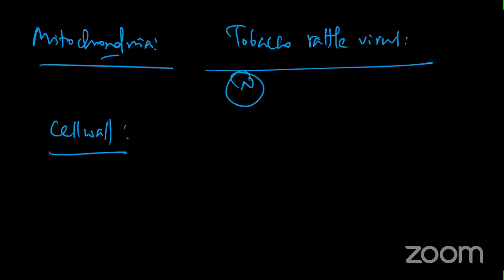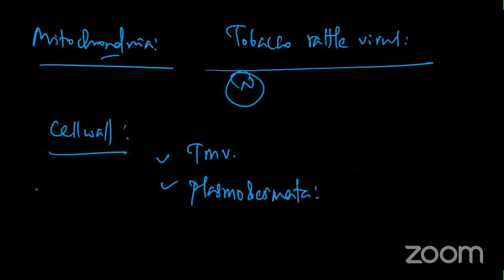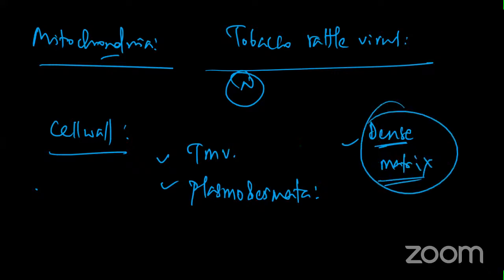Plasmodesmatal expansion helps in movement of macromolecules and viruses. There can also be dense matrix or junk matrix deposited, causing the cell wall to bulge and disrupting its integrity. These are the pathological changes - organelle modifications by different viruses.